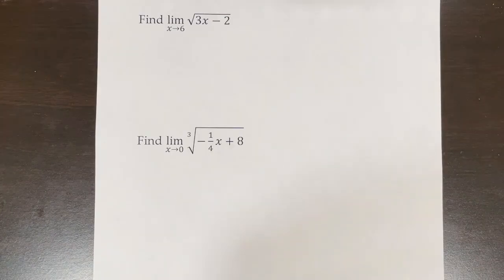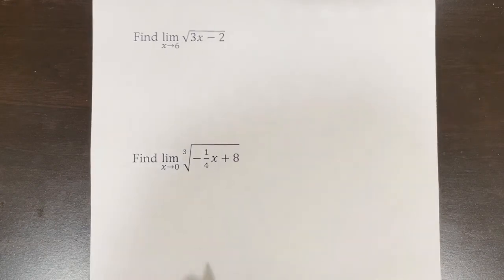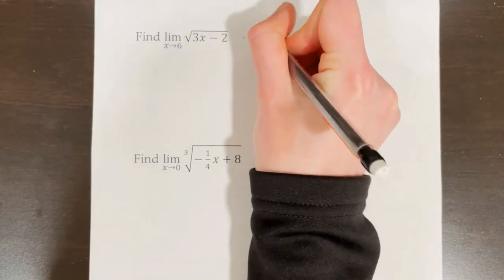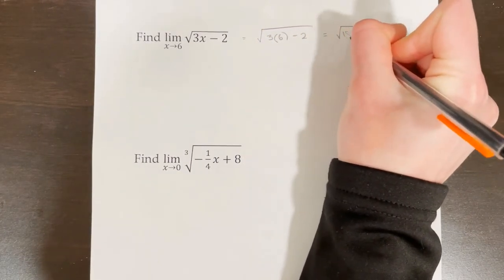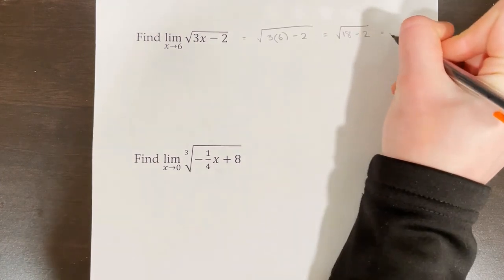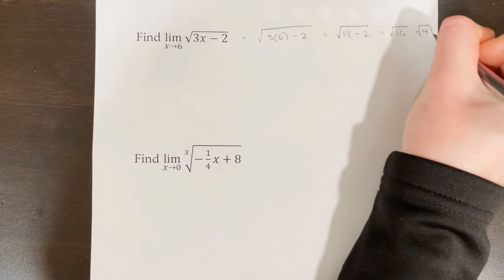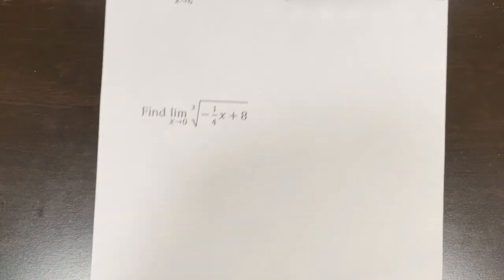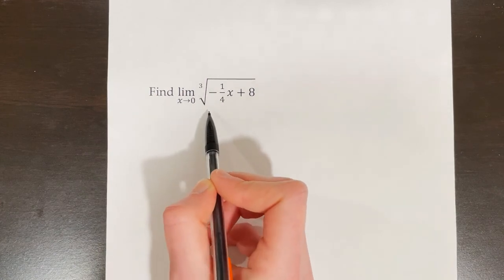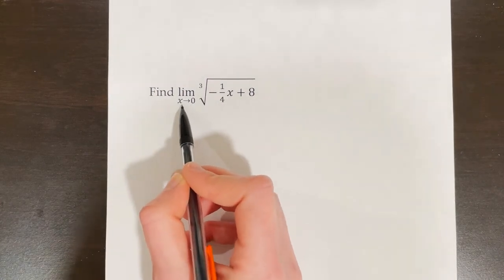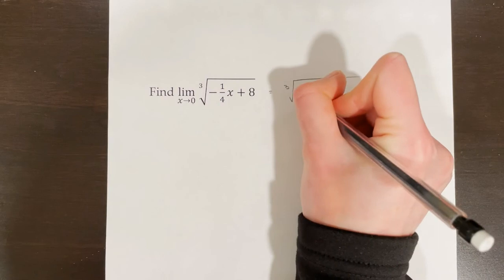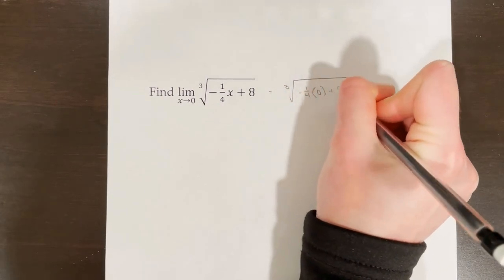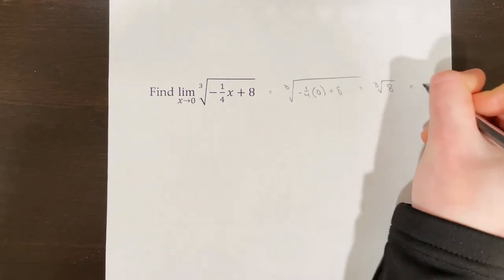Cube roots and square roots are continuous functions, so in both cases I can use direct substitution. For the square root example: the square root of (3 times 6 minus 2) equals the square root of 16, which is 4. For the cube root example: plugging in x equals 0 gives the cube root of (negative one-fourth times 0 plus 8), which is the cube root of 8, which equals 2.